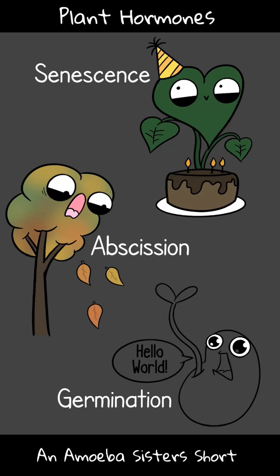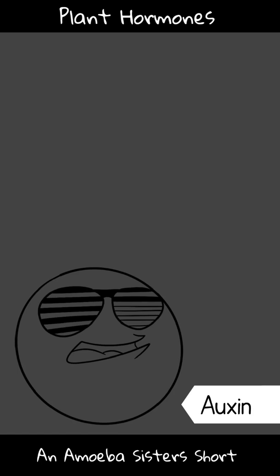Onto a few hormones with a few of their major functions. Auxin: this can stimulate stem elongation, it can also regulate fruit development, and prevent or slow leaf abscission.